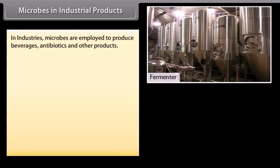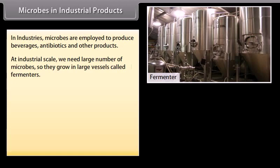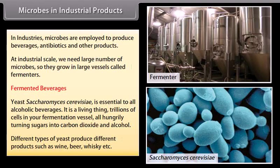Microbes in industrial products. In industries, microbes are employed to produce beverages, antibiotics and other products at industrial scale. We need a large number of microbes, so they grow in large vessels called fermentors. Saccharomyces cerevisiae is essential to all alcoholic beverages. It is a living thing — trillions of cells in your fermentation vessel, all hungrily turning sugars into carbon dioxide and alcohol. Different types of yeast produce different products such as wine, beer, whiskey, etc.